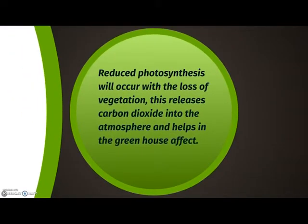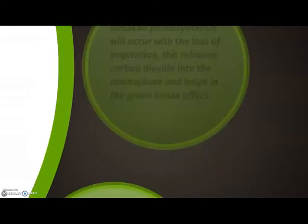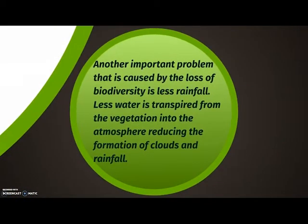Reduced photosynthesis will occur with the loss of vegetation. This releases carbon dioxide into the atmosphere and contributes to the greenhouse effect. Another important problem caused by the loss of biodiversity is less rainfall, as less water is transpired from vegetation into the atmosphere, reducing the formation of clouds and rainfall.